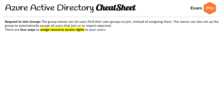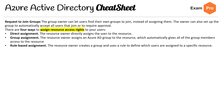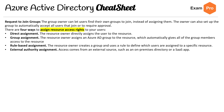There are four ways to assign resource access rights to your users: direct assignment, group assignment, rule-based assignment, and external authority assignment. Know all four of these.